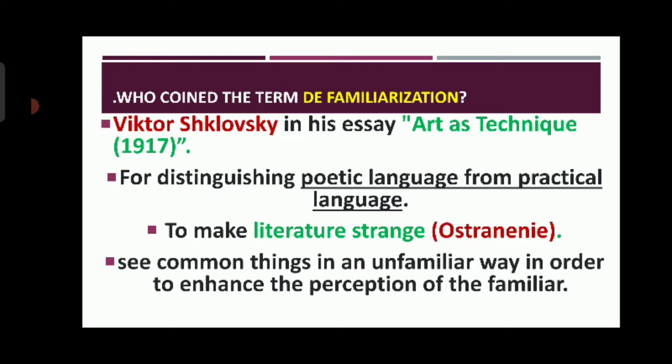For example, everything in nature has beauty, but see how Keats made it strange by using verbal art: 'a thing of beauty is a joy forever.' Another example is George Orwell's Animal Farm, where the animal images, story structure, and language expressions are all presented in a strange way.